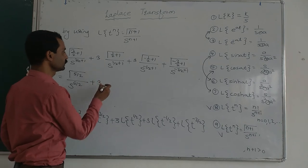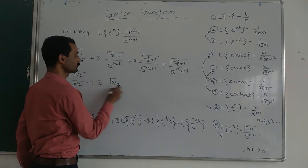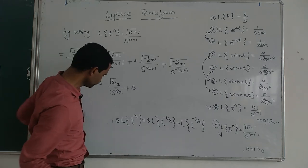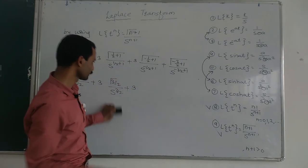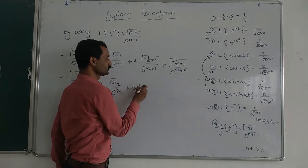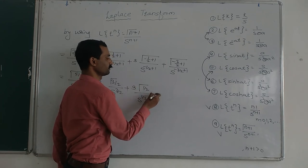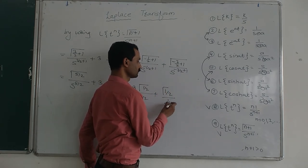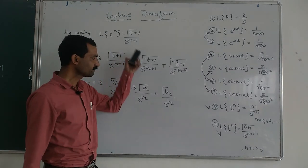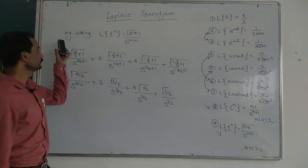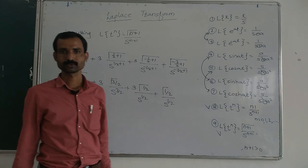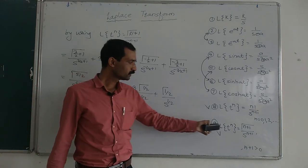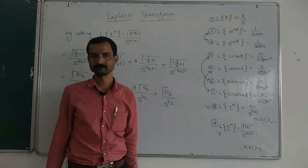Simplifying the exponents: 3/2 + 1 equals 5/2, minus 1/2 + 1 equals 1/2, and minus 3/2 + 1 equals minus 1/2. So the final answer is gamma(5/2) upon s^(5/2), plus 3 times gamma(3/2) upon s^(3/2), plus 3 times gamma(1/2) upon s^(1/2), plus gamma(-1/2) upon s^(-1/2). This is how we find the Laplace transform of (root t + 1 upon root t) whole cube. Each term has only fractional power, so we used formula number 9 throughout.